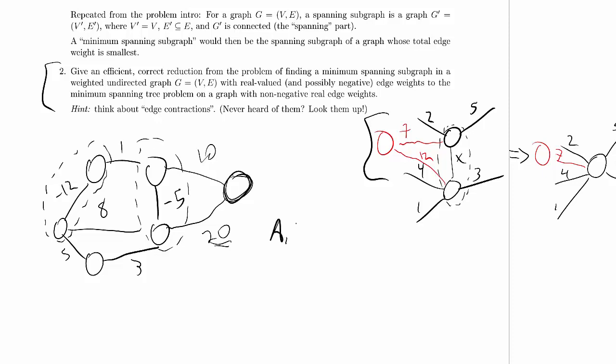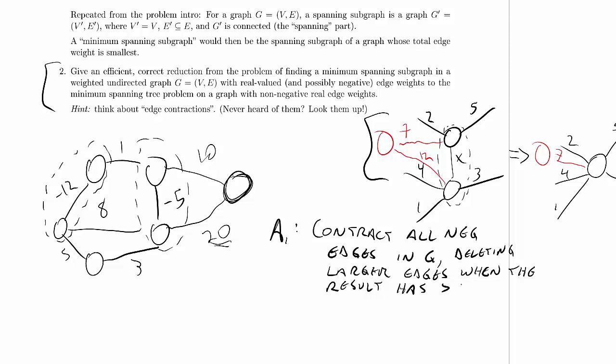Remember, a reduction is two algorithms. That means algorithm one is going to take our original problem and turn it into the new problem. Contract all negative edges in G, deleting larger edges when the result has more than one edge between one pair of nodes. And then that creates a new problem, that is the minimum spanning subgraph problem with no negative edge weights.